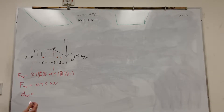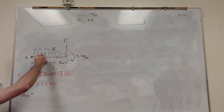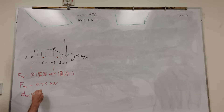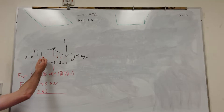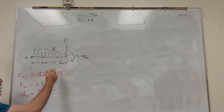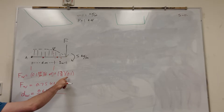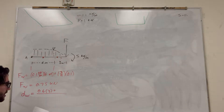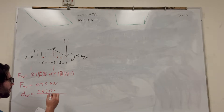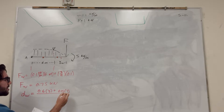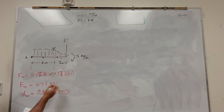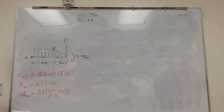Let's label this distance of W — this is where the combined force acts. The formula is: multiply the weight of the rectangular section, 0.6 kilonewtons, by its center of mass at 3 meters, and add that to the weight of the triangular section — which is 3 halves times 0.1, so 0.15 kilonewtons — times its center of mass at 7 meters. Then divide the whole thing by the total force of 0.75 kilonewtons.